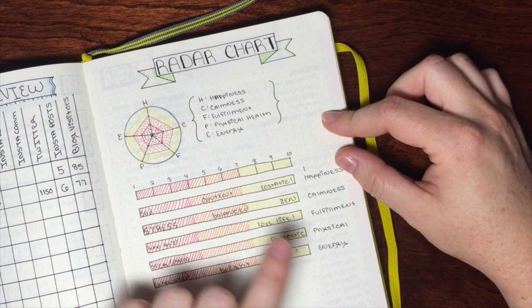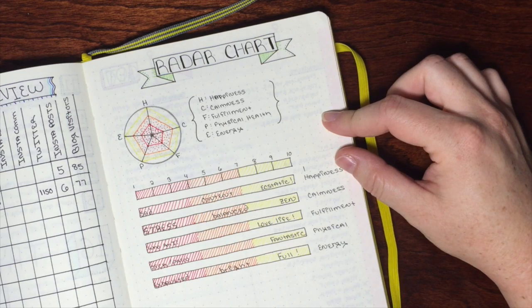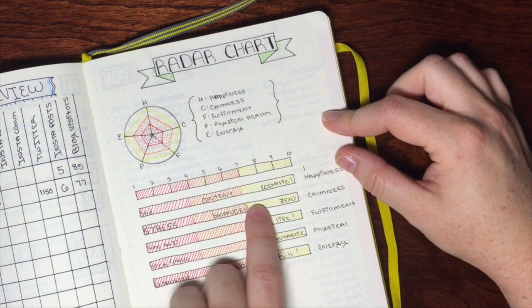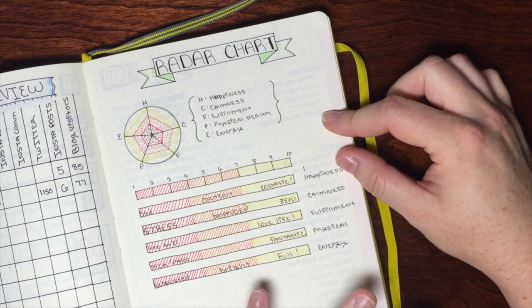That's a general, normal, everyday, nothing bad, nothing crazy is going on, nothing ridiculously exciting. Whereas going all the way up to a 10 is full-on ecstatic.